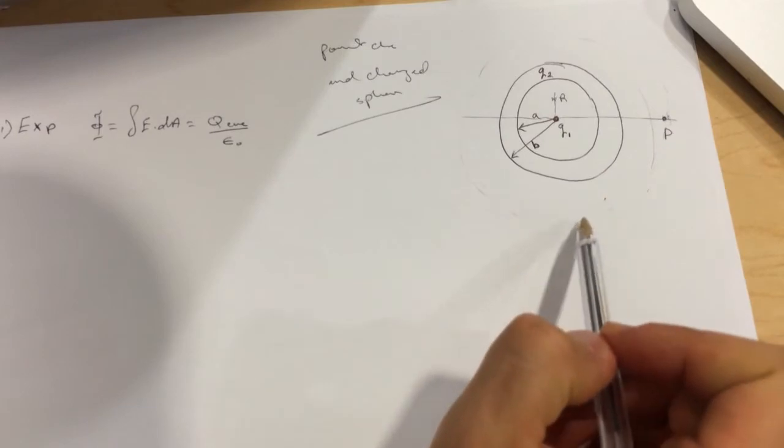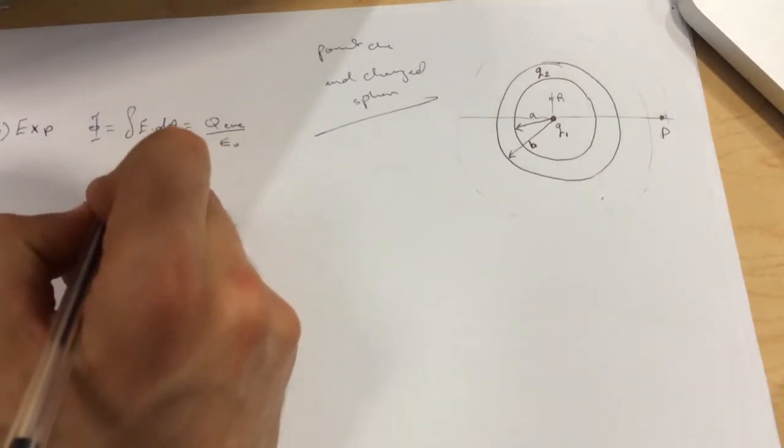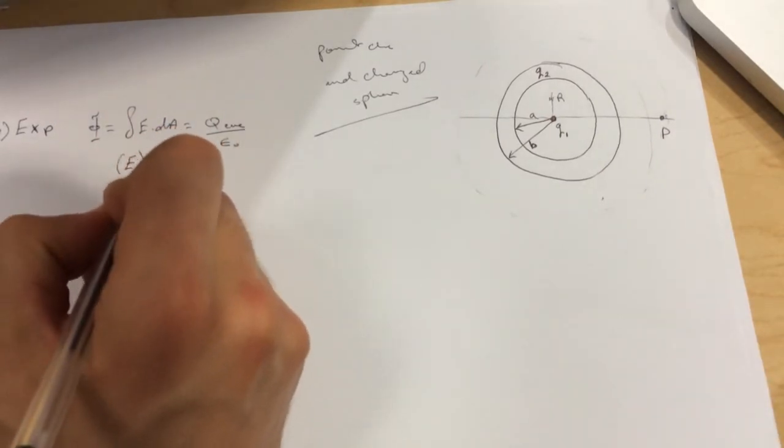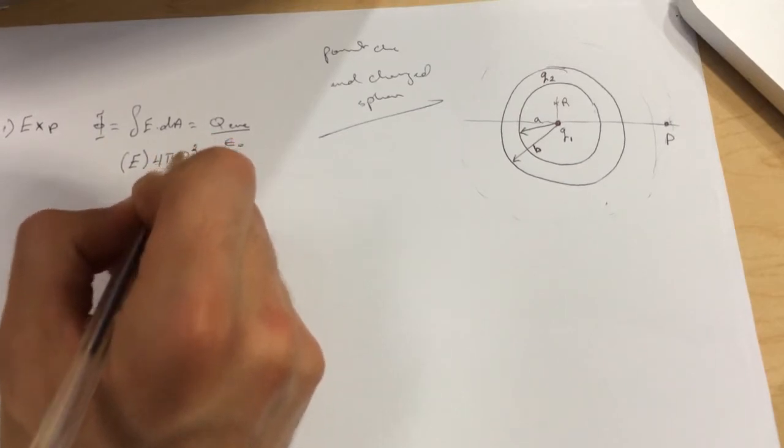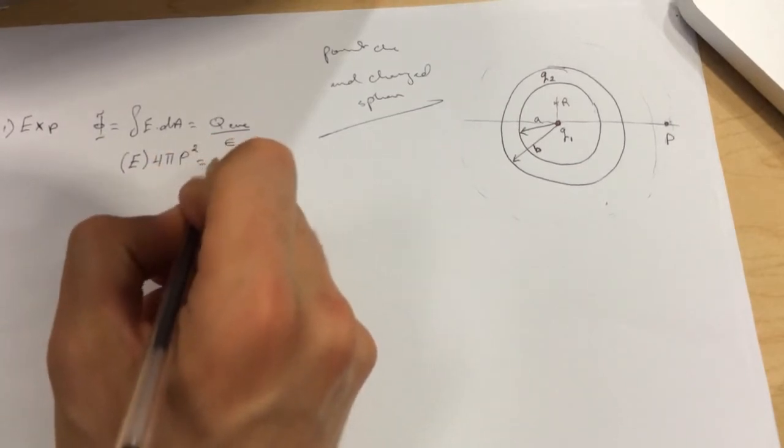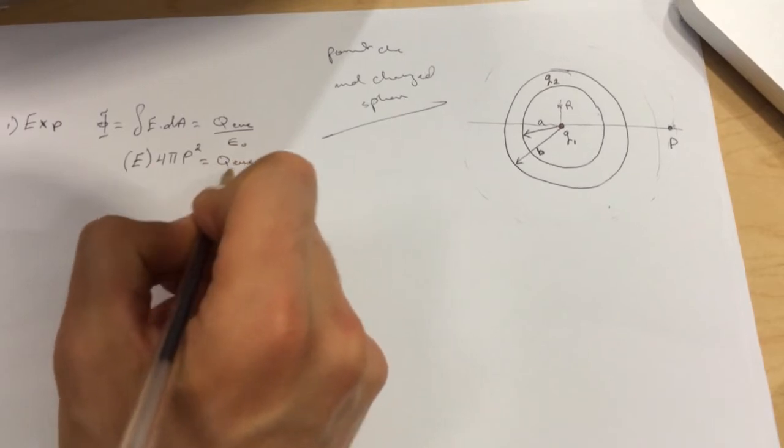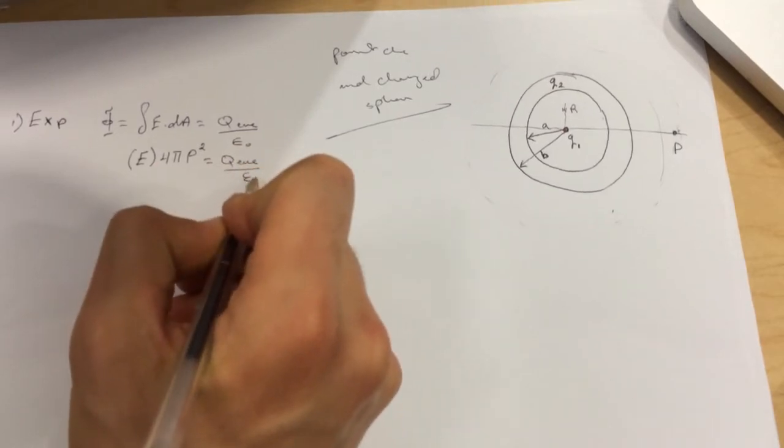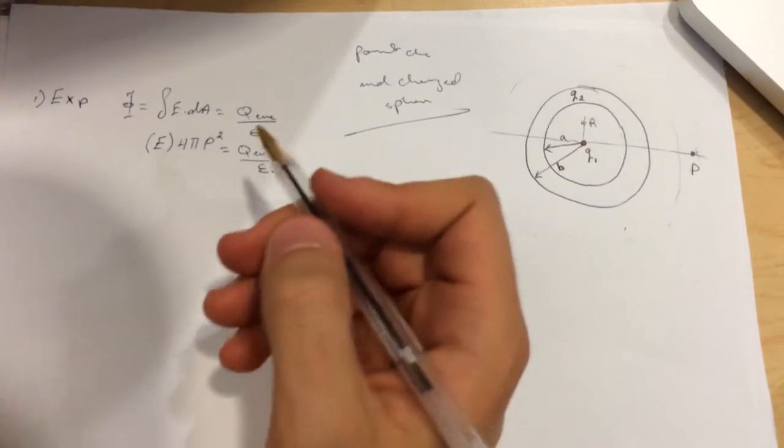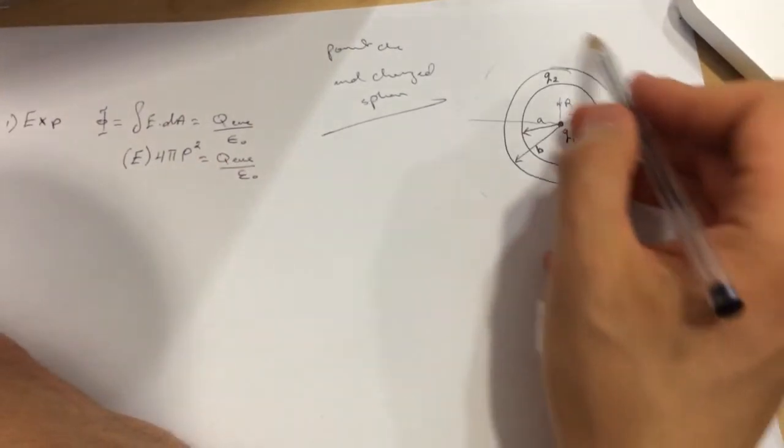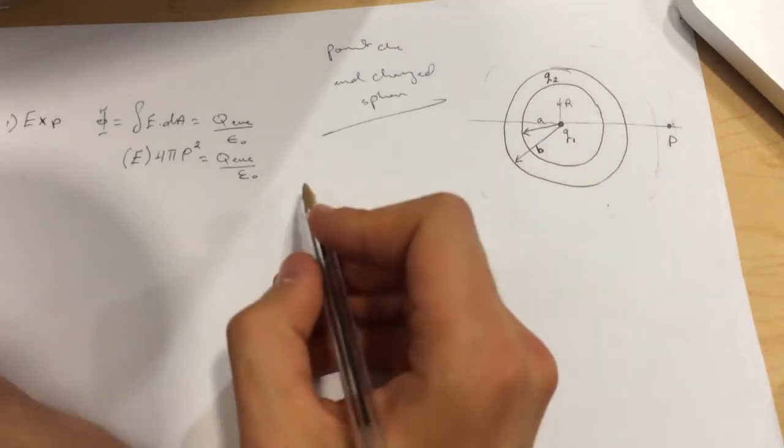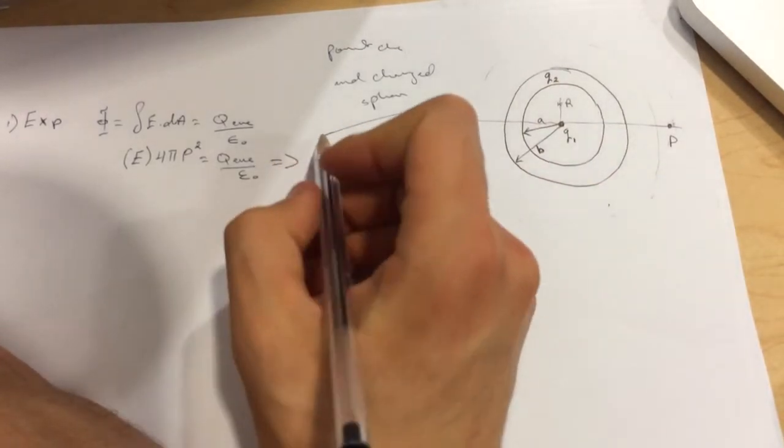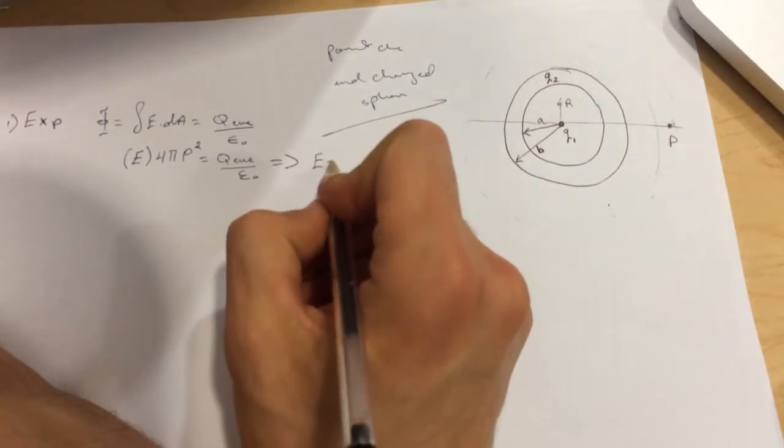So here will be E times 4πP² equal to Q enclosed divided by epsilon naught. The Q enclosed in this surface is Q1 plus Q2. From this we'll get E equal to...